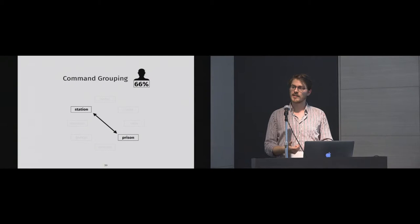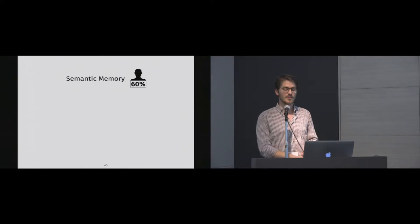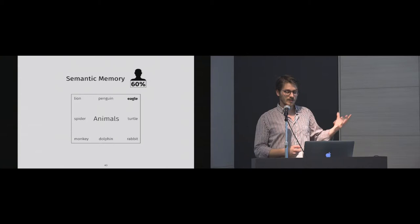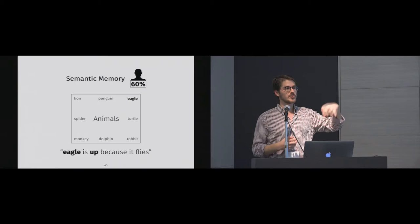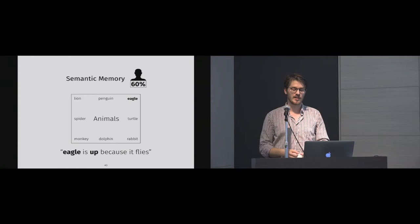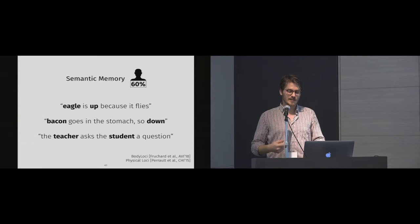Another strategy was leveraging semantic memory, used by 60% of participants. For example, in the positions condition, if the command to memorize was 'eagle' placed on top of the menu, a participant might say 'eagle is up because it flies.' The idea is that participants used the concept of the command and associated it with a position. This leveraging of semantic memory is known to be very efficient in the literature.